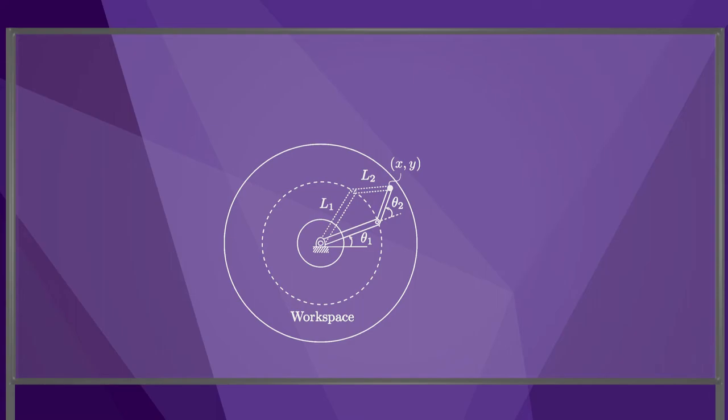The workspace of the tip of the robot is bounded by circles. The inner circle has radius L1 minus L2, and the outer circle has radius L1 plus L2. If we request a tip position xy outside the workspace, there are no inverse kinematic solutions. If we request a tip position on the boundary of the workspace, there is one solution.